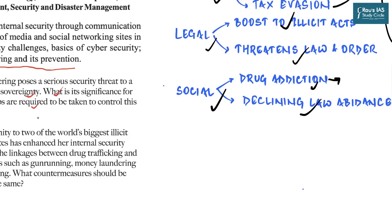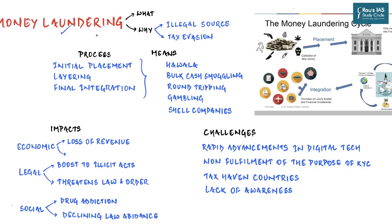Money laundering is a process that criminals use to hide the illegal source of their income. They pass illegally obtained assets and money through complex transfers, transactions, or a series of businesses, and in that process the money is cleaned — black money goes in as input and clean money comes out as output, which can then be utilized just like legitimate money without government restrictions or regulations.